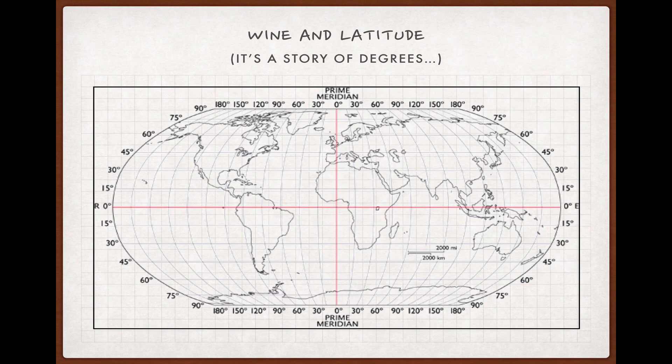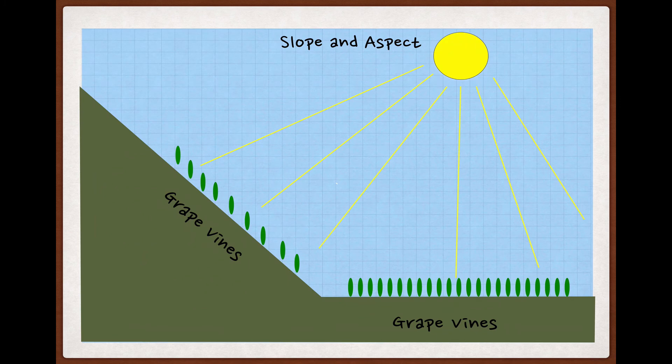And in that cast, I had a section on the significance of vineyard slope and aspect and how they relate to latitude. Well, it's confession time, and I'm here to confess that I'm not happy with that section of that cast.